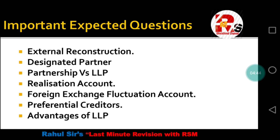External Reconstruction is next — in Semester 5 we learned internal reconstruction; now it is external reconstruction, which is also called amalgamation. There is also a very important short note called Designated Partner — the chances of this coming are high. Next is Partnership versus LLP: the difference between a partnership and an LLP, which is a hybrid structure. Also study Realization Account, related to amalgamation, and Foreign Exchange Fluctuation Account (FF Account).